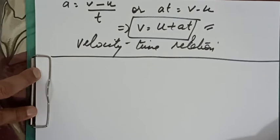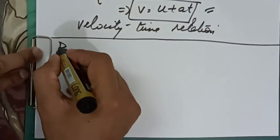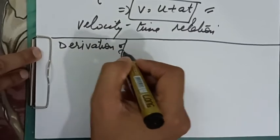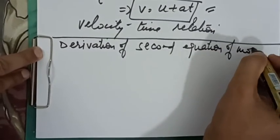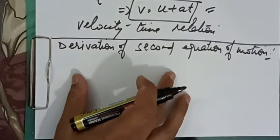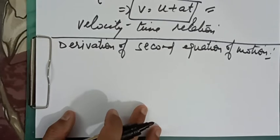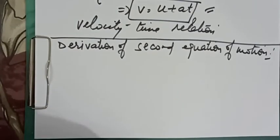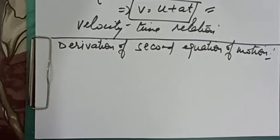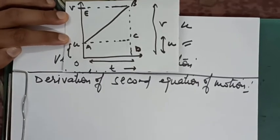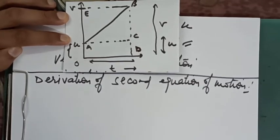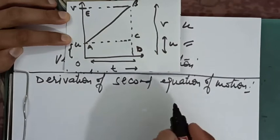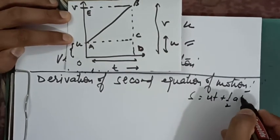Next we will study the derivation of the second equation of motion. We will consider the same graph as we made for the earlier equation. The second equation of motion is S = ut + ½at².